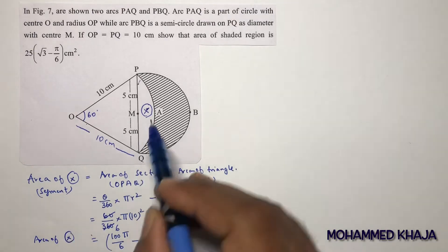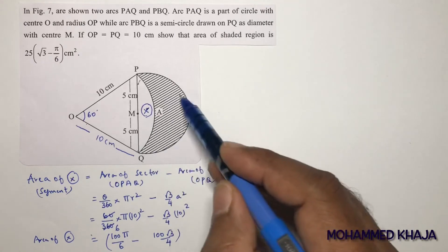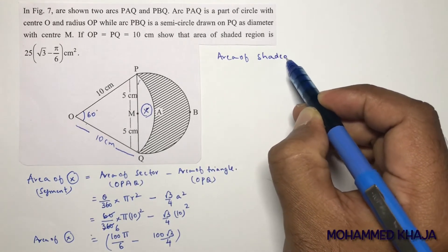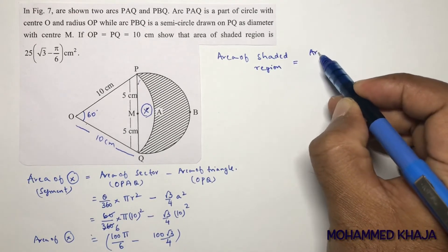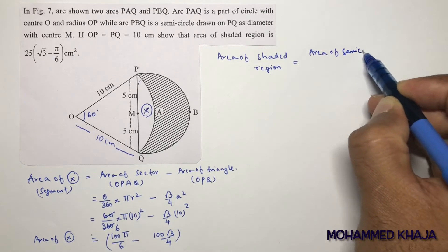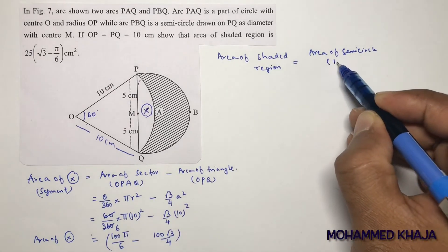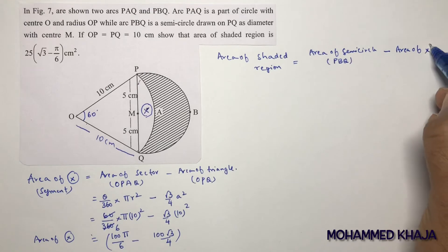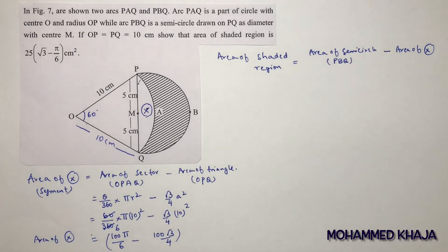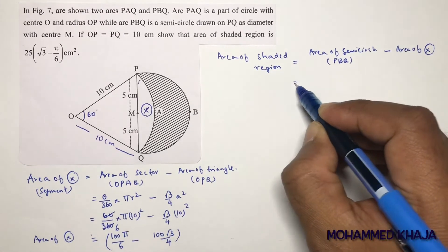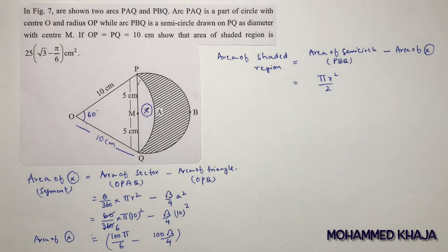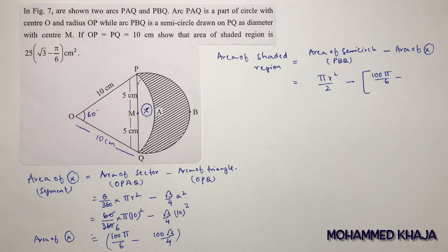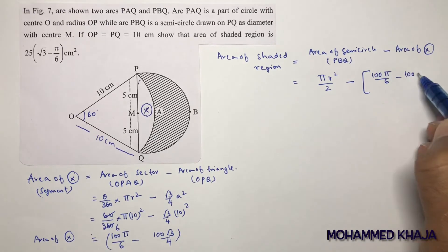Now to find the area of the shaded region: area of semicircle PBQ minus area of segment X. The formula for area of a semicircle is πr²/2. The radius of the semicircle is 5 units (half of PQ = 10). So: π(5²)/2 minus (100π/6 minus 100√3/4), which gives 25π/2 minus 100π/6 plus 100√3/4.